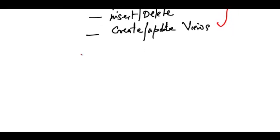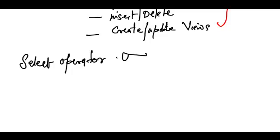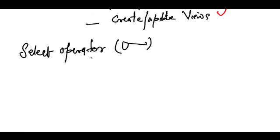We will start with unary operator. Unary means taking a single operand. So first unary operator that we are going to study is the select operator, which is the sigma operator. We use a sigma to denote a select operator. Select operator is used to select one or more set of rows from a table.